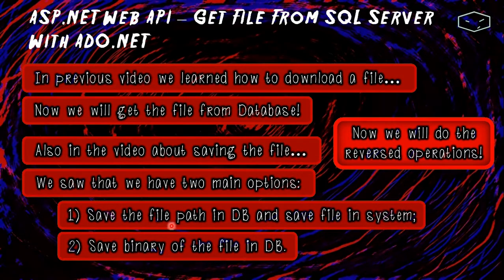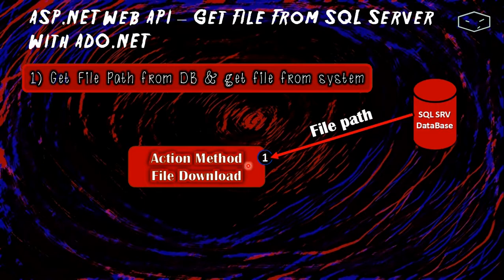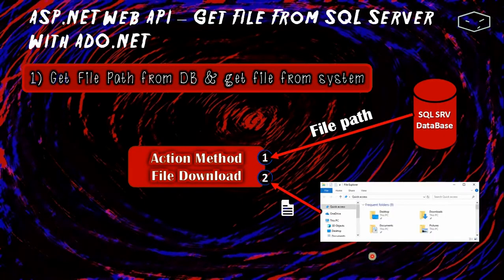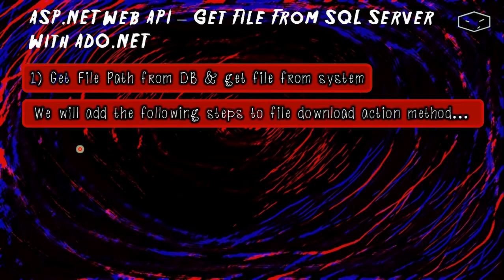We will get the file path and then send the file, and we will get the binary of the file and send the file. To get the file path from the database and retrieve the file from the system, we already have the action method from the previous video, and we will add the operation of getting the file path from the database, then getting the file from the system with that file path, then sending the file to the client.